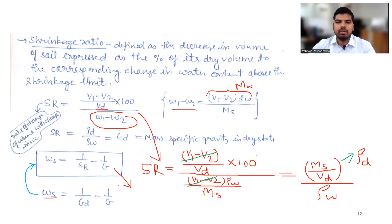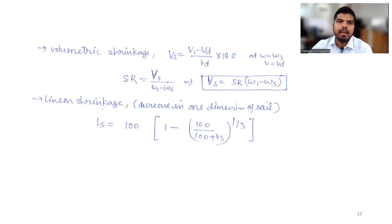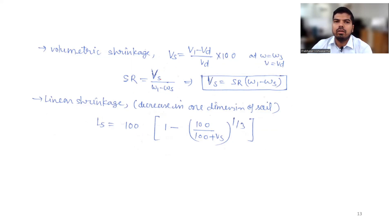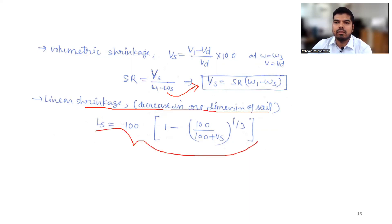Volumetric shrinkage Vs is defined as Vs = (V1 − Vd) / V × 100, at shrinkage limit where V = Vd. The shrinkage ratio can be expressed in terms of volumetric shrinkage divided by (W − Ws). Linear shrinkage shows the decrease in one dimension of the soil, and its expression denotes the linear shrinkage of the soil.